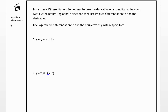Here we're going to learn about something called logarithmic differentiation. The idea is that sometimes when we have a complicated function — taking roots, multiplying things together, or dividing lots of things — if we take the natural log of both sides and use some log rules to simplify it, then we can use implicit differentiation to find our derivative.